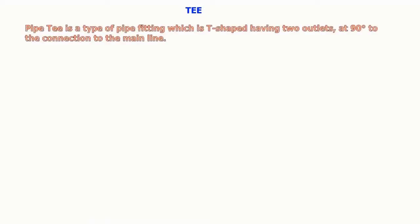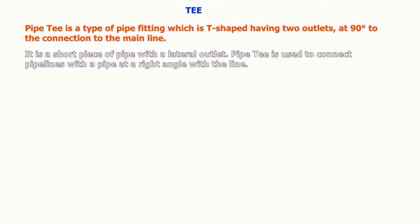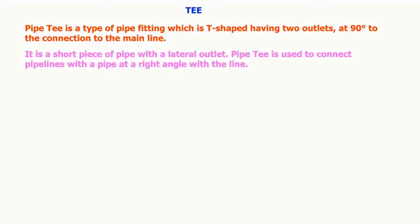Pipe T is a type of pipe fitting which is T-shaped, having two outlets at 90 degrees to the connection to the main line. It is a short piece of pipe with a lateral outlet. Pipe T is used to connect pipelines with a pipe at a right angle with a line. There are two types of pipe Ts: equal T and unequal T.